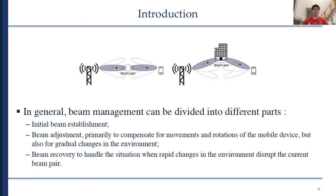Let's summarize this introduction and state which parts beam management can be divided into. The first one is initial beam establishment. The second one is beam adjustment, done primarily to compensate for movements and rotations of the mobile device and also compensation for changes in the environment. The third part of beam management is beam recovery, which is done to handle the situation when rapid changes in the environment disrupt the current beam pair.